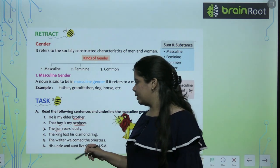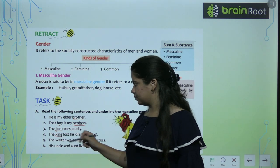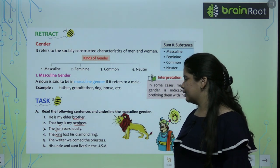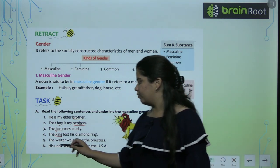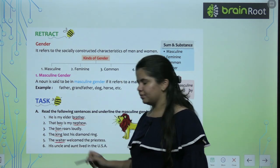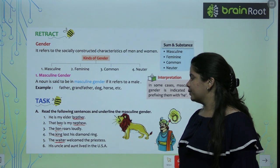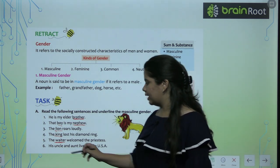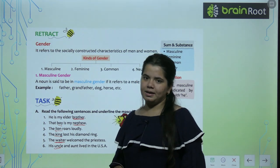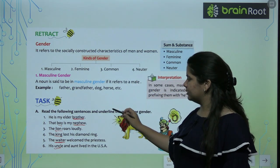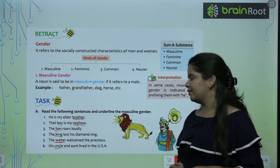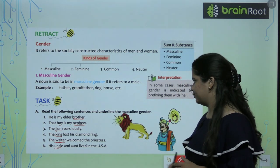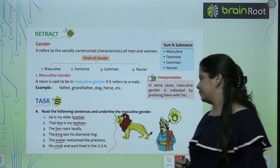The king lost his diamond ring — the king is masculine. The waiter welcomed the priestess — the waiter is masculine. His uncle and aunt lived in the USA, so uncle will be your masculine. Brother, nephew, boy, lion, king, waiter, uncle — ye saare hamare masculine genders hain, jo hum males ke liye use kerti hai.